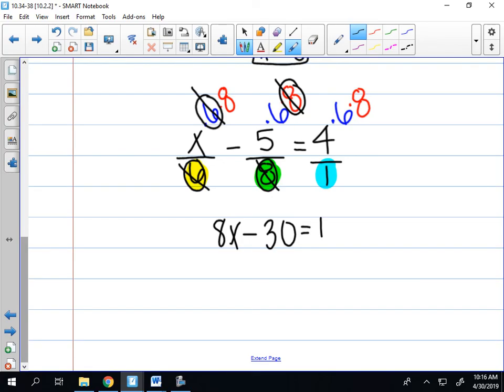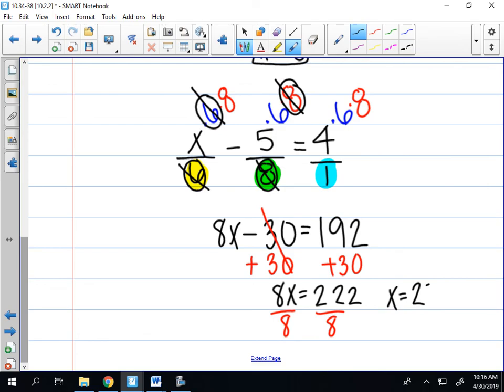So if you use a calculator you're going to see that that is 192. And now we have an equation without any fractions that we can solve. So to solve for x, I'm going to add 30 to both sides because that will cancel, and I have 8x equals 222. Finish it out by dividing both sides by 8, and you should get the answer x equals 27.75.